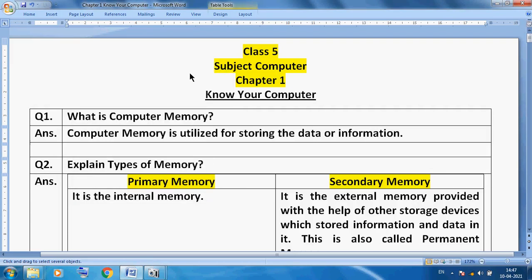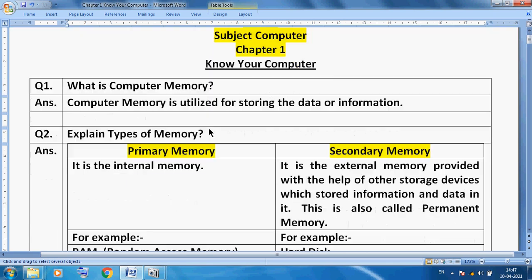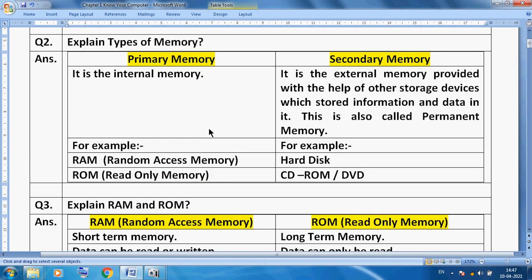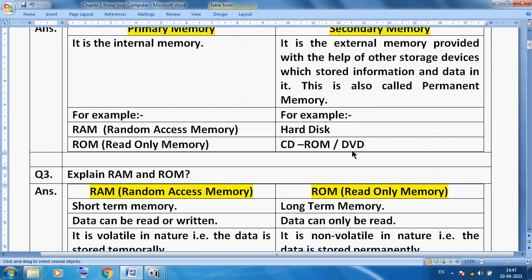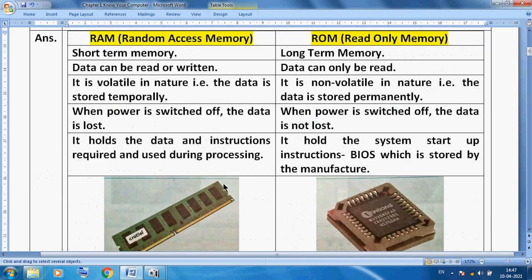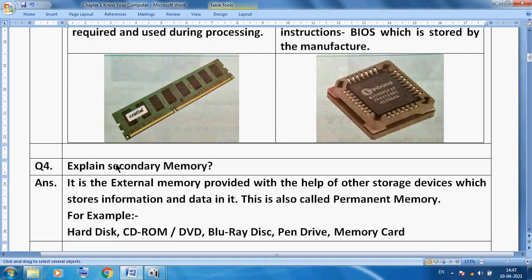Hello students, welcome back. Class 5, subject Computer, Chapter 1 is 'Know Your Computer.' I have discussed about computer memory types — types of memory: primary memory and secondary memory. We covered the difference between RAM and ROM, and secondary memory.